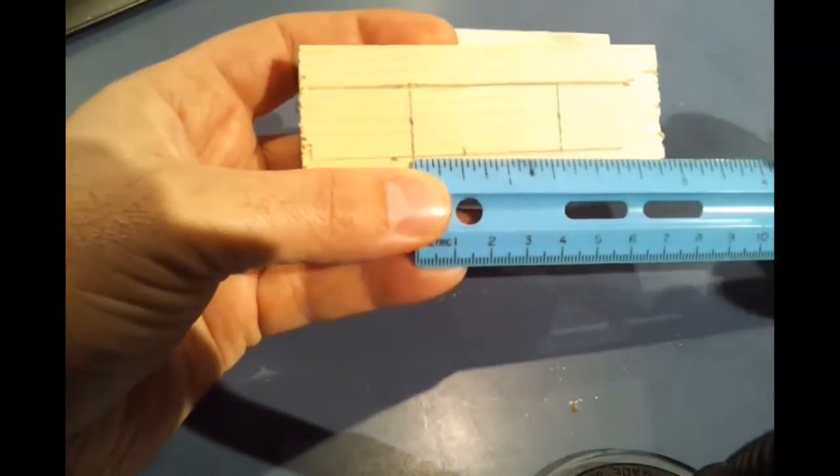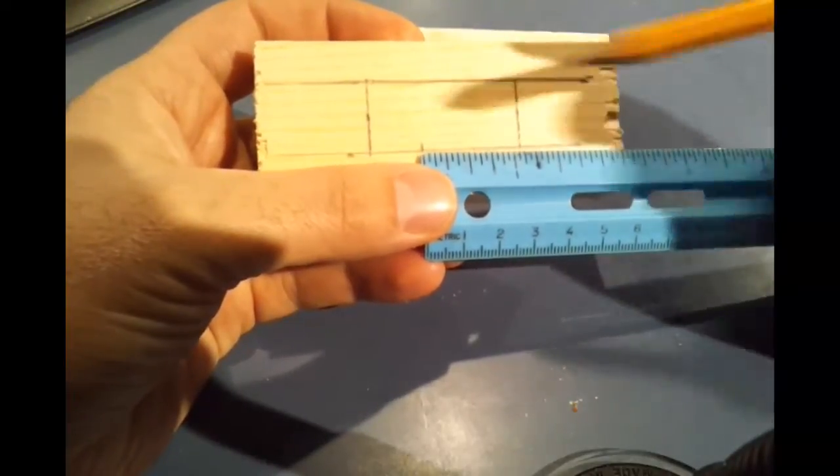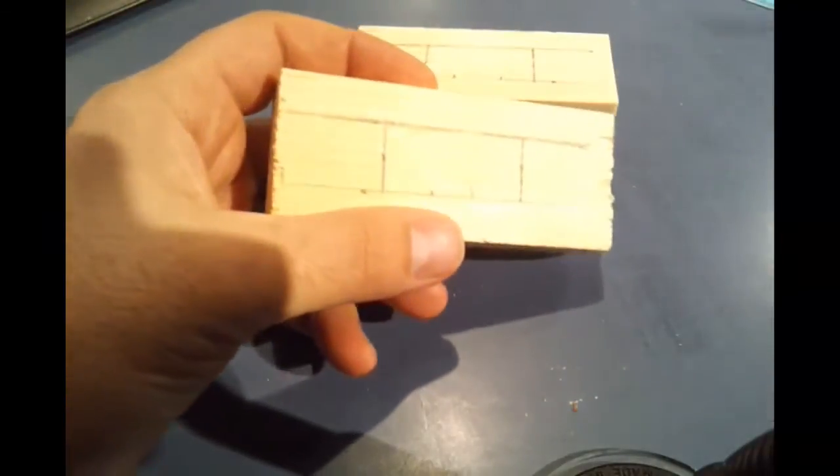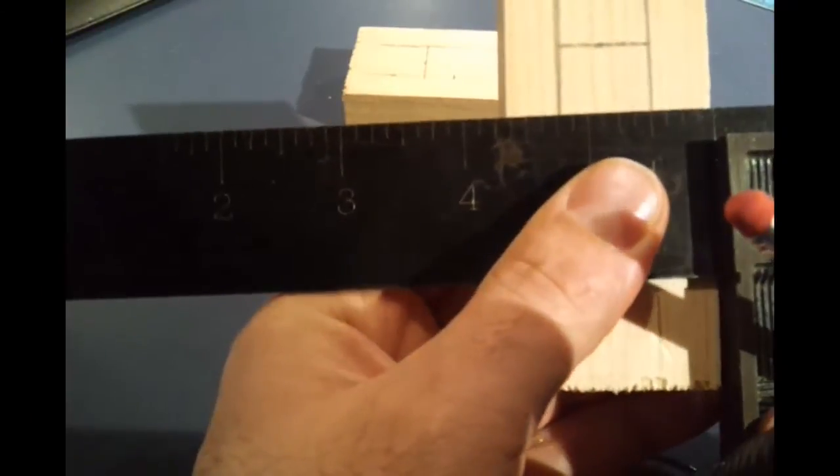And from the 9/16 inch mark, you're going to measure over a half of an inch. Using your squares, draw a line from those marks right over.